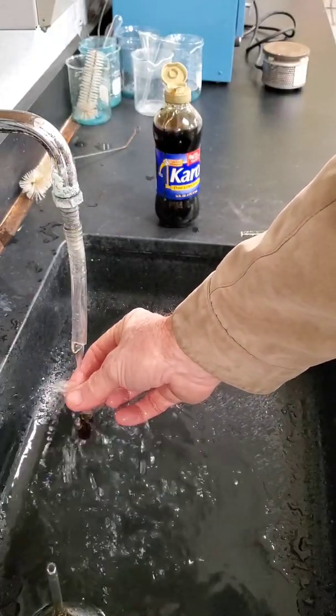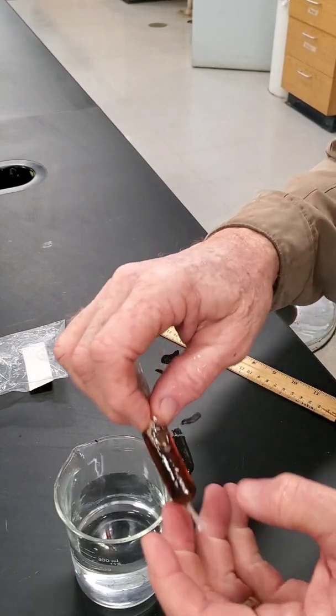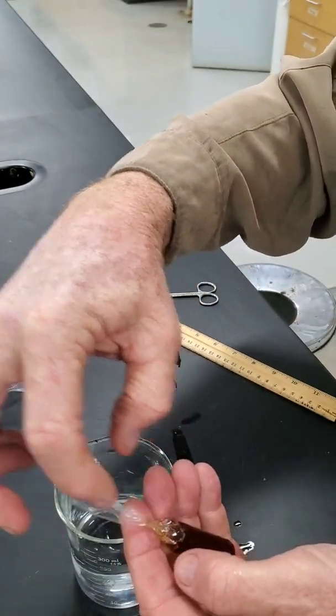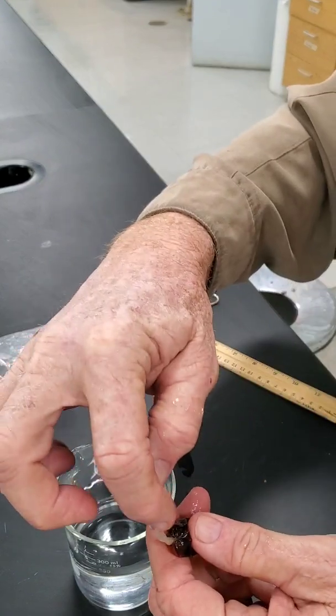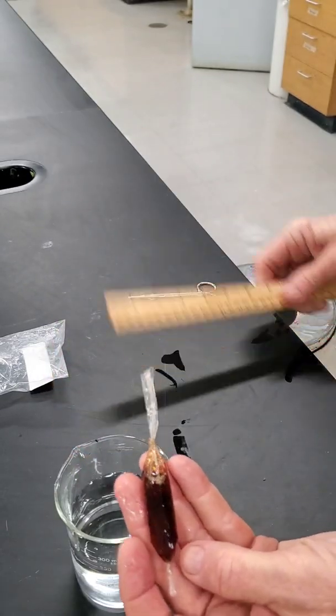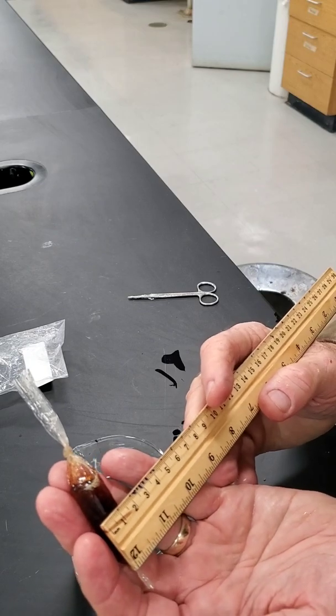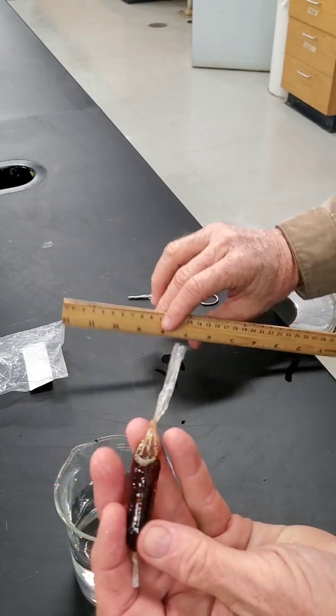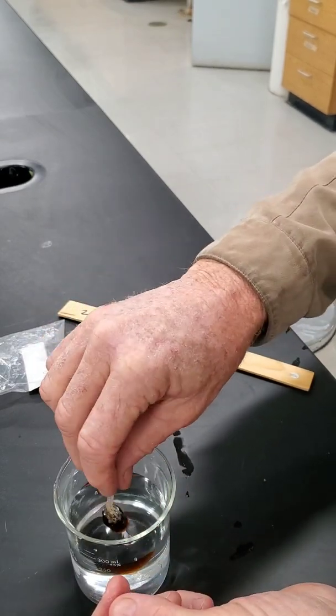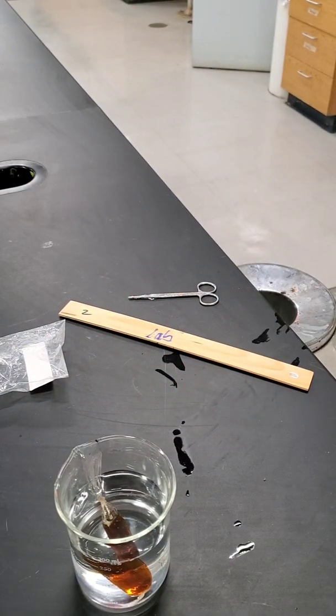Now we need to rinse it off really good and get all the sugar off the outside of it. We rinsed it off thoroughly. Let's just remember what it looks like. The width of it in centimeters is about 1.5 centimeters or 15 millimeters across. We're just going to drop it into our little beaker of distilled water and now all I have to do is wait for a few minutes and see what happens.